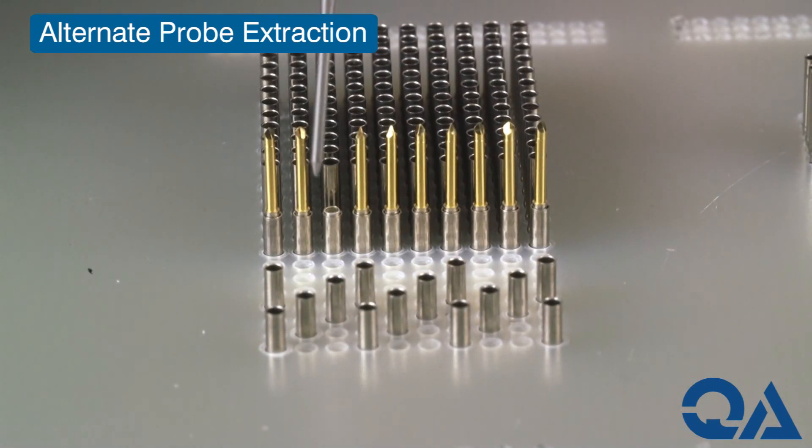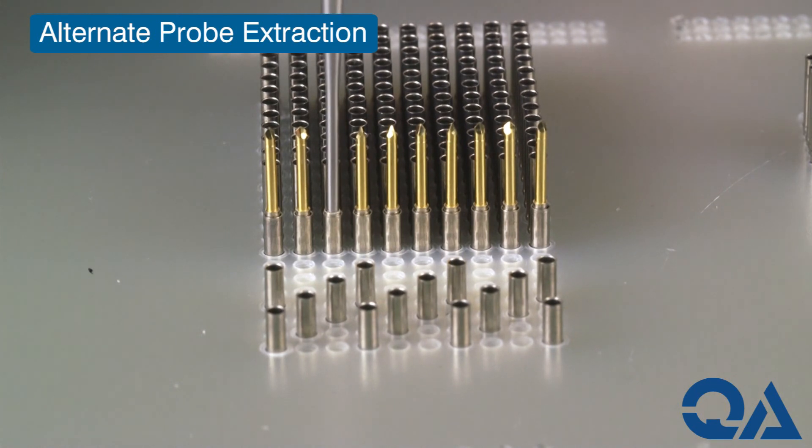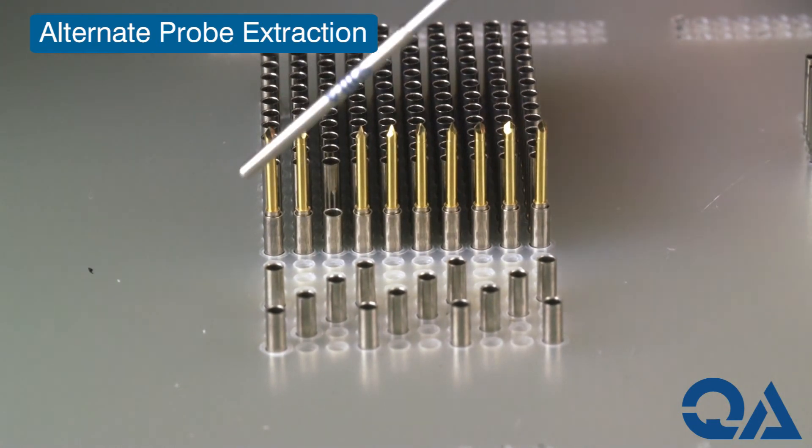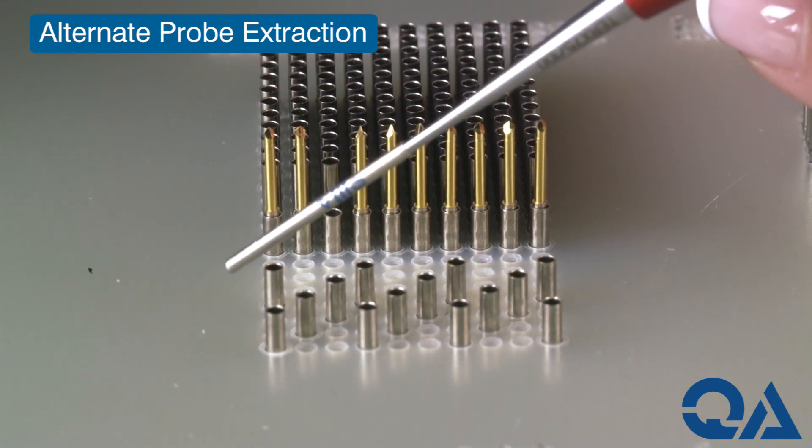Push firmly into the probe tube, taking care not to push too hard if the socket below will move. Pull straight up on the tool. The portion of the broken probe tube will be removed as the tool is pulled out.